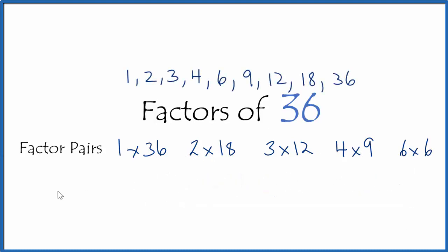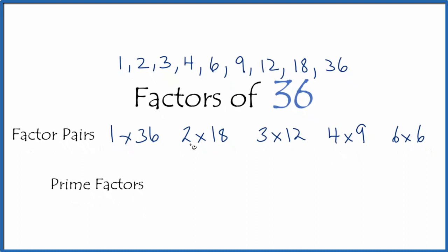We want to find the prime factors. Those are the prime numbers when multiplied together, give us 36. Here's how we do that. Let's choose one of these and then break it down further. So how about 4 times 9?